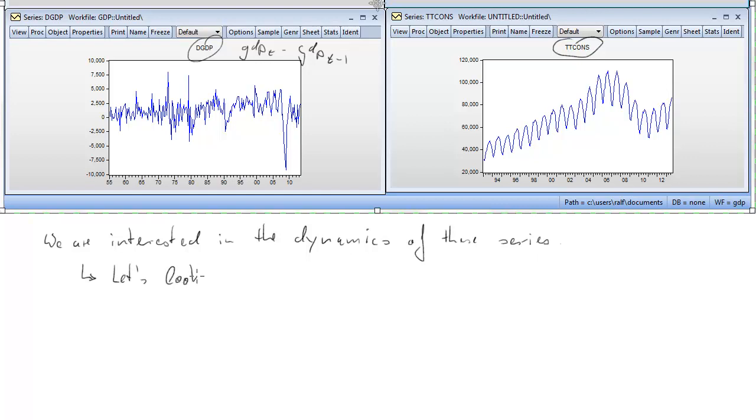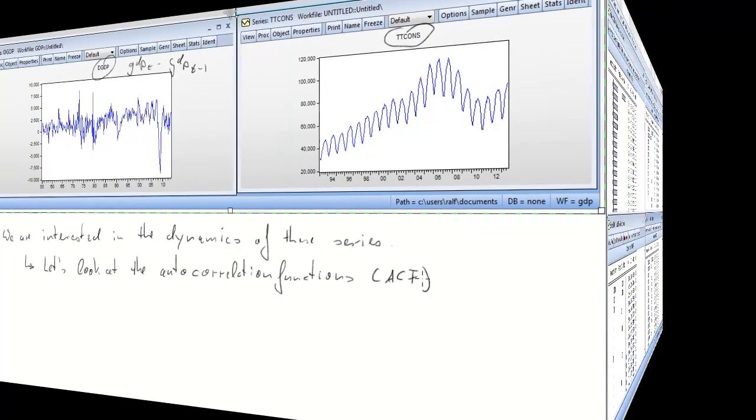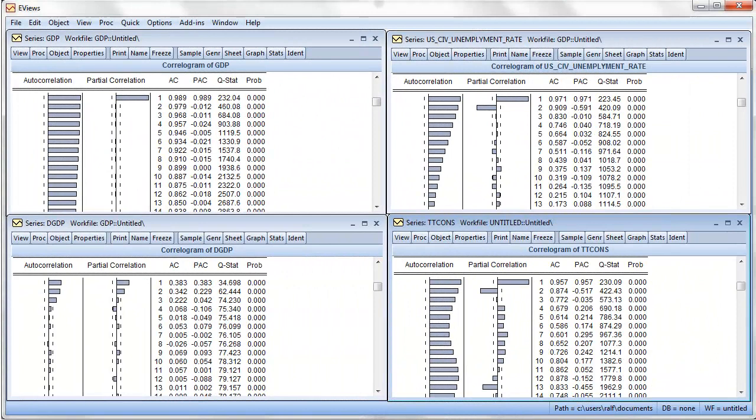So the dynamics of these series are in fact captured in what are called the autocorrelation functions, or ACFs. So let's look at the respective autocorrelation functions of these four series. And here they are.